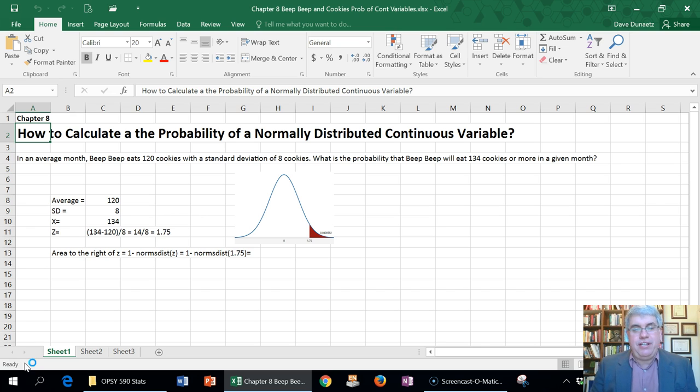In fact, there's a standard deviation of eight cookies per month. So that means that most months he eats between 112 to 128. So that's 120 plus or minus eight. So that's a standard deviation of eight.